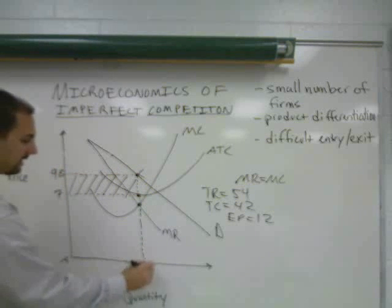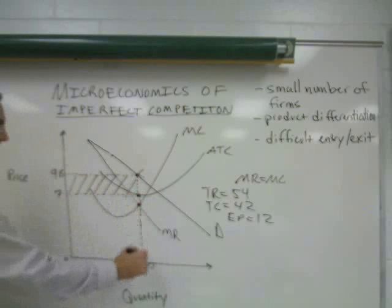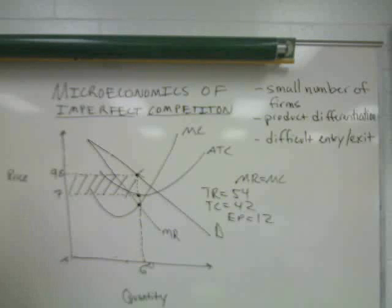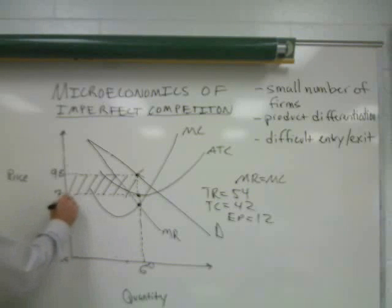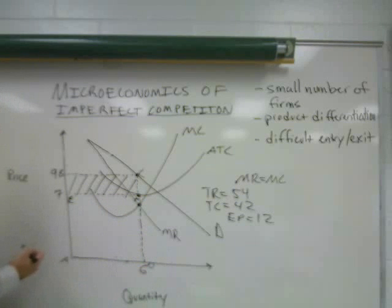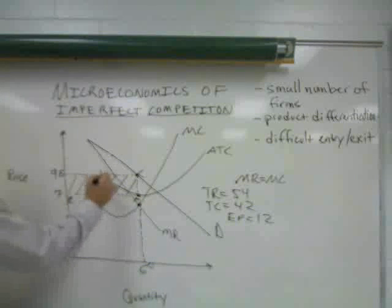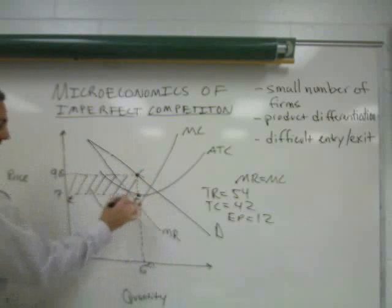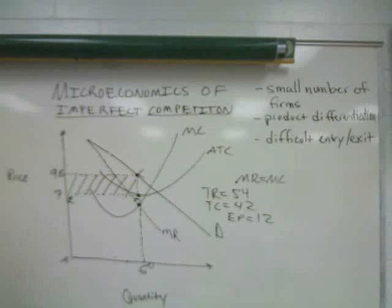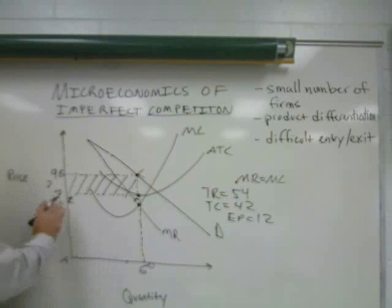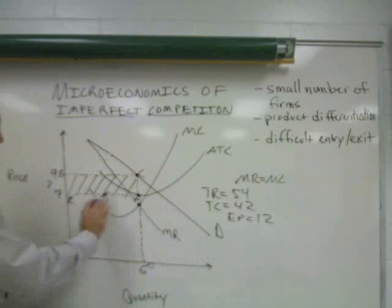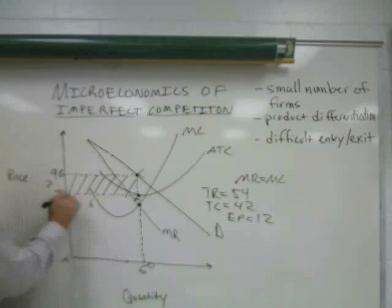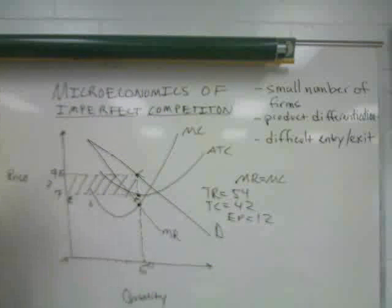If we label the corners A, B, C, D, that rectangle represents our total revenue. If we add points E and F, then rectangle A, E, F, D represents our total cost. The area B, C, F, E is our economic profit rectangle. The vertical distance between points C and F is $9 minus $7, which is $2. The horizontal distance between E and F is our quantity of six units. Two times six gives us $12 — our economic profit.